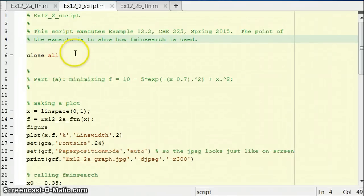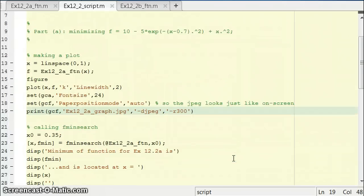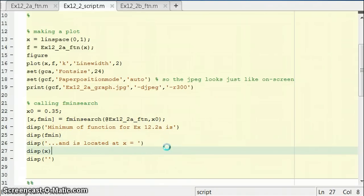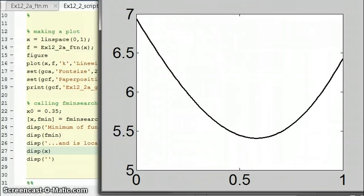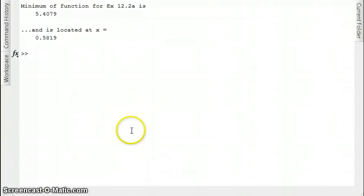At the beginning of the script, closing all figures, and then we're going to, at first, make a plot, so that's not something that you need to know, at least explicitly for this example, but then to call fminsearch, it's going to look something like this, where we have an initial guess, we call fminsearch, and then I'm going to display the answers. So if I run this little cell here, it pops up the figure that I was showing you before. And in addition, on the MATLAB side, it tells me that the minimum of the function is 5.4, and it's located at 0.58 for x.